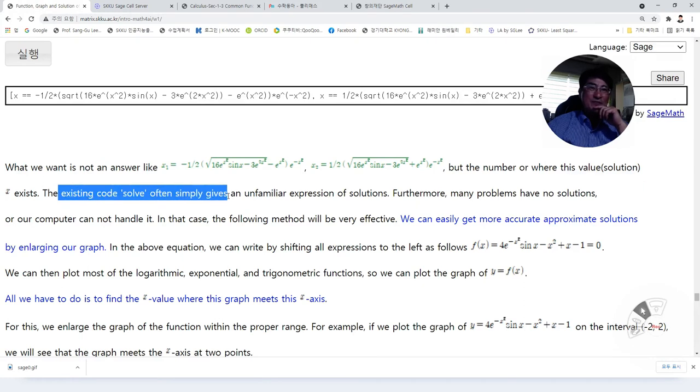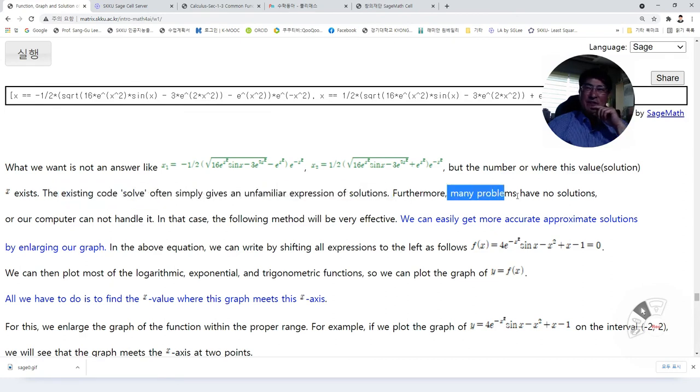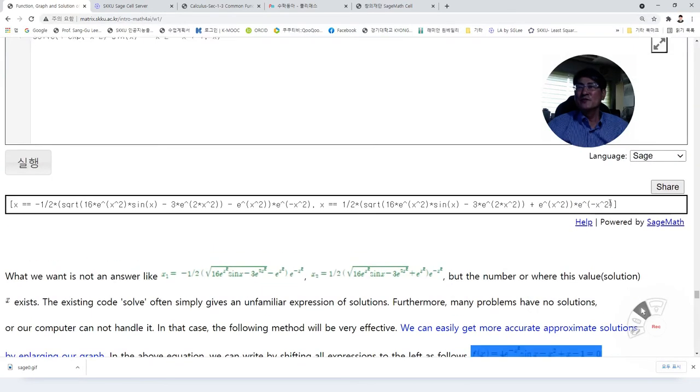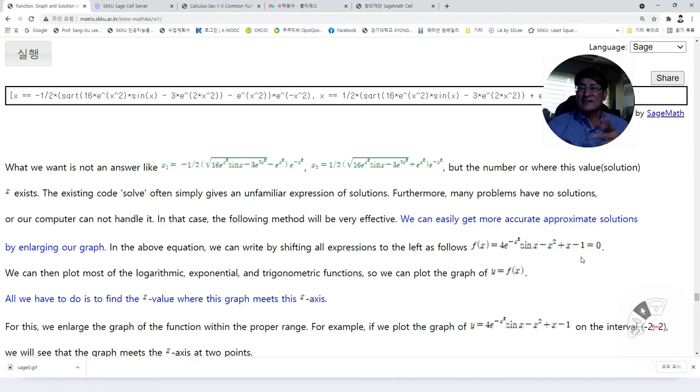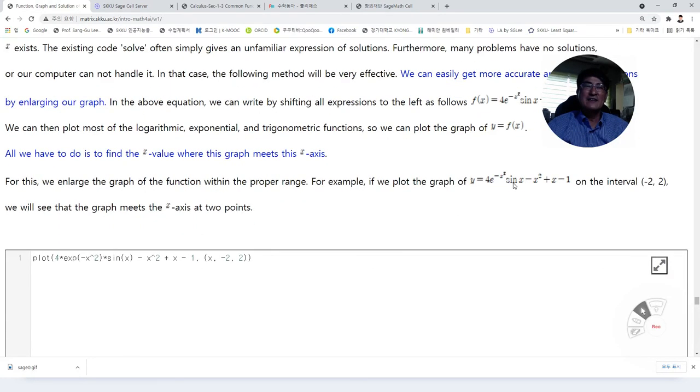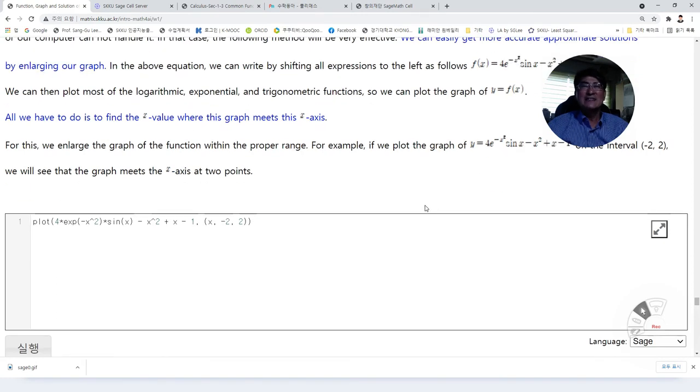So, the existing code solve often simply gives an unfamiliar expression of solutions. Furthermore, many problems has no solutions. Or our computer cannot handle it. In that case, the following method will be very effective. We can easily get more accurate approximate solutions by enlarging our graph. We have learned to draw the graph of this function. If we move the left side to the right, then you will have the function f of x like this. Then we can draw the graph of it. Then we will see where is the solution.